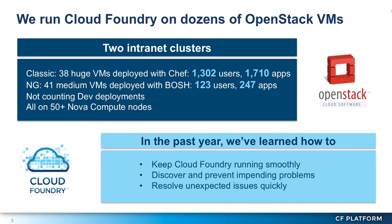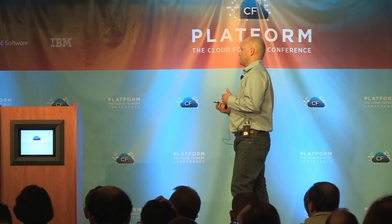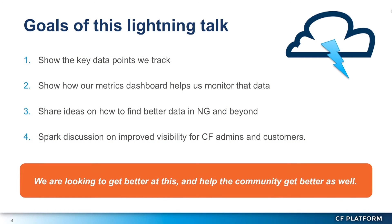In the past year running these two systems, we've learned some great lessons. We've been able to keep Cloud Foundry running pretty smoothly with fairly few outages. We've been able to discover problems before they happen, fix them, and resolve them when they do. What I'm going to do is show you those key data points that we look for, show how the dashboard helps you monitor that data, and hopefully share some ideas and start discussion on where we can go next to find better data in the next releases.